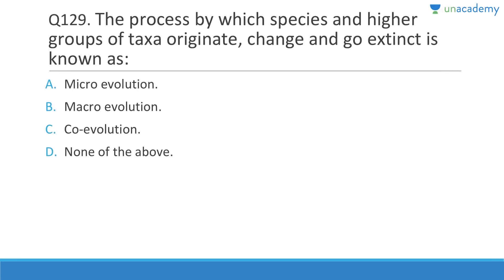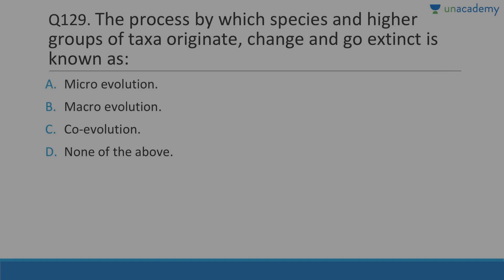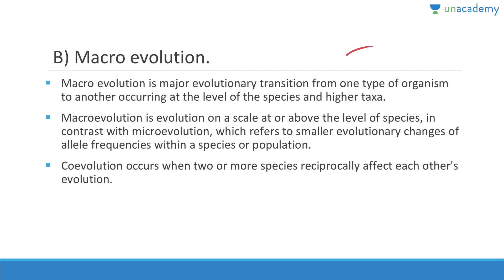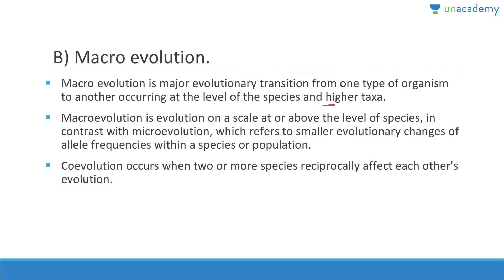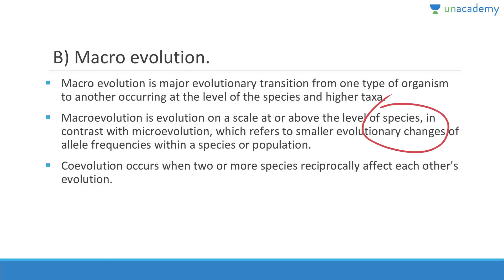The process by which species and higher groups of taxa originate, change, and go extinct is known as macroevolution — it involves major evolutionary transitions at the level of species and higher taxa, in contrast to microevolution, which refers to smaller evolutionary changes of allele frequencies within a species or population.